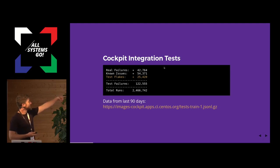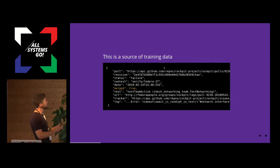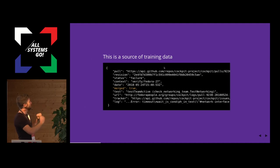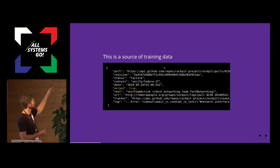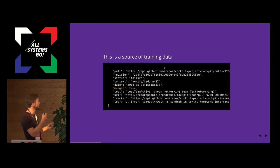If you want to access this data, there's a URL that is constantly updated every week, and the data inside this file looks something like this. It's in JSON-L format, and each line is a different record. We have data about the pull requests being tested, the revision pushed to that pull request, the status of a test — whether it's a failure — where it was tested, in this case Fedora 27, the date at which it was tested, the test name, the URL for the log, whether that issue is tracked somewhere else, and the actual contents of the log.